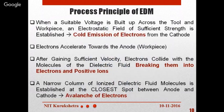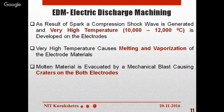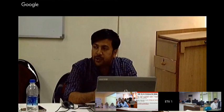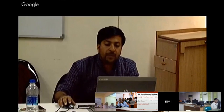The process principle steps are: cold emission of electrons, electrons accelerate towards anode, breaking of dielectric fluid into electrons and positive ions, formation of a narrow ionized column (avalanche of electrons), temperature rise to 10,000–12,000°C, melting and vaporization of electrode material, and finally molten metal is evacuated by a mechanical blast causing craters on both electrodes. Continuous dielectric fluid flushing removes metal debris from the machining zone for better process capability.